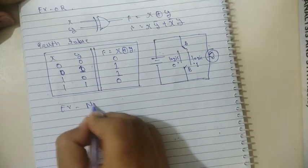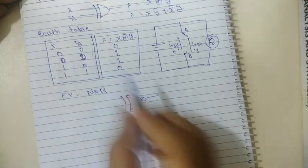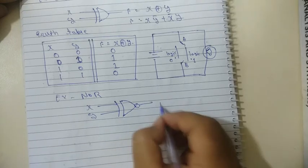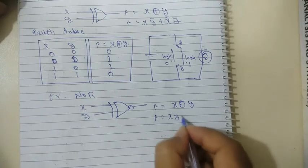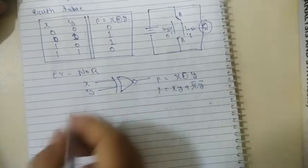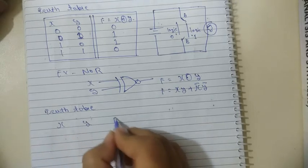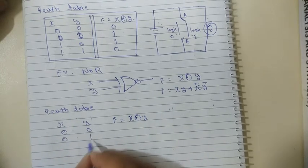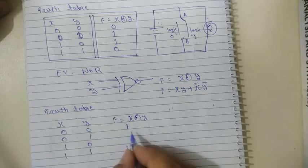The last gate is the XNOR gate, which is the complement of the XOR. The output of the XOR has a NOT gate symbol added. Output F equals X XNOR Y, or F equals XY plus X-bar Y-bar. For the truth table, the output will be 1 when both inputs are the same — either 0,0 or 1,1. If the inputs are different — 0,1 or 1,0 — then the output will be 0.